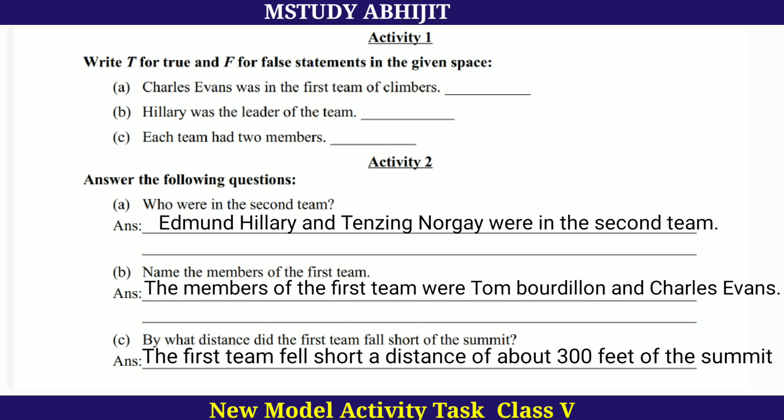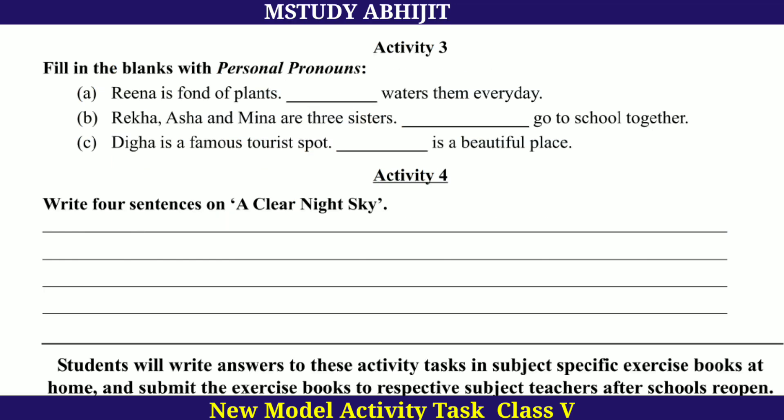Activity 3: Fill in the blanks with personal pronouns. Rena is fond of lands — she waters them every day. Rena is a girl, so the personal pronoun is 'she.' Rena is fond of lands; she waters them every day. Next: Reka, Asha and Mina are three sisters; they go to school together. Next: Digha is a famous tourist spot; it is a beautiful place.